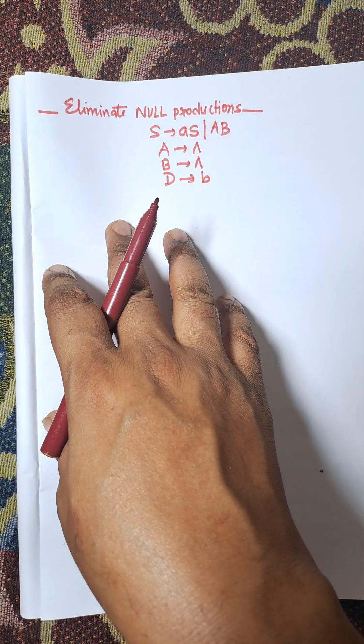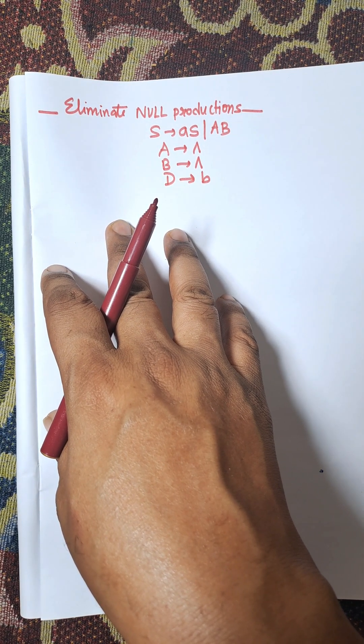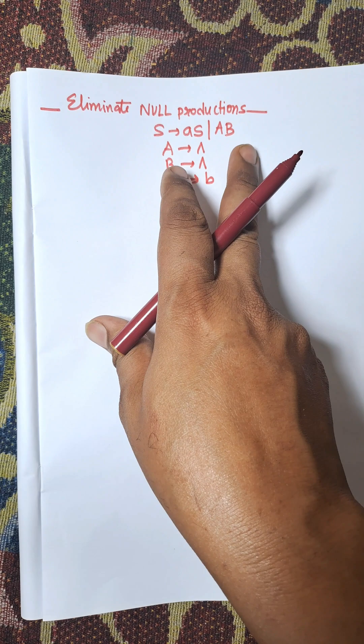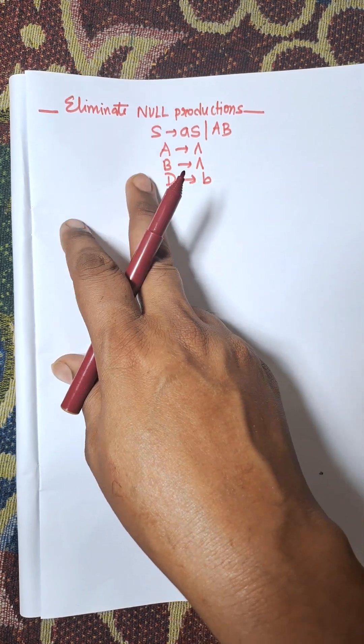Hi everybody, in this video I am going to discuss the following problem in automata theory: eliminate null productions for the following production rules.